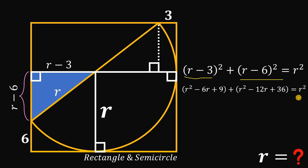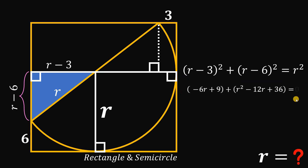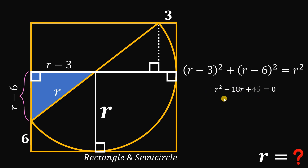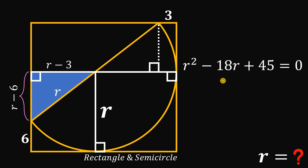Bringing down and simplifying: we can eliminate the positive r² on the right-hand side, giving zero on that side. Combining like terms: negative 6r and negative 12r gives negative 18r, and 9 plus 36 gives 45. So we have the quadratic equation: negative 18r plus 45 equals zero.